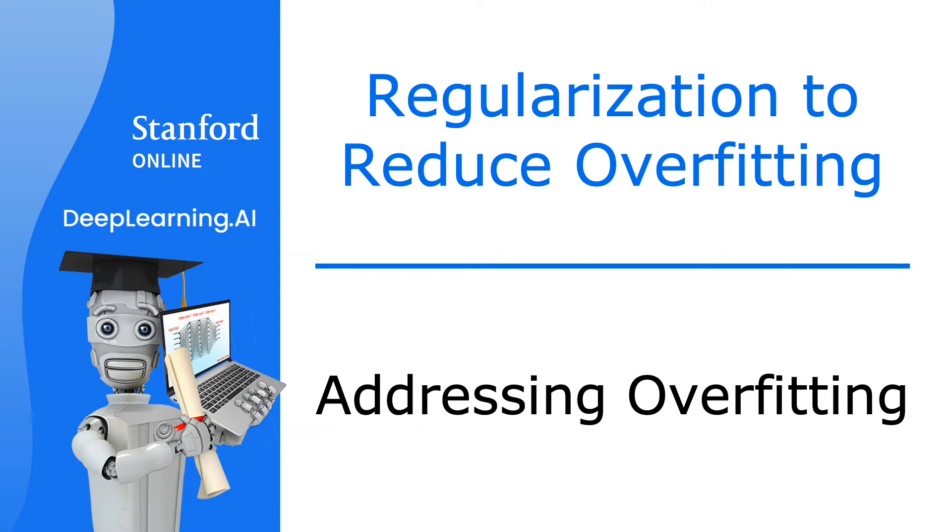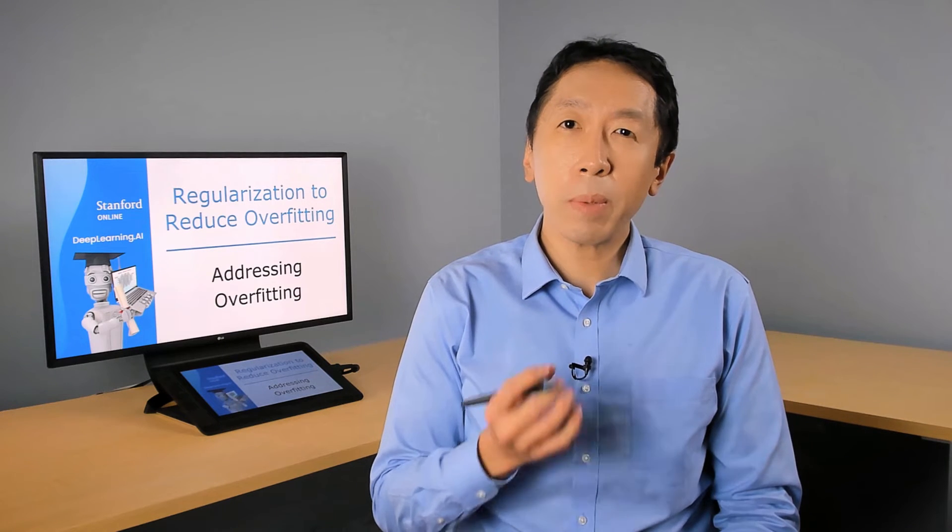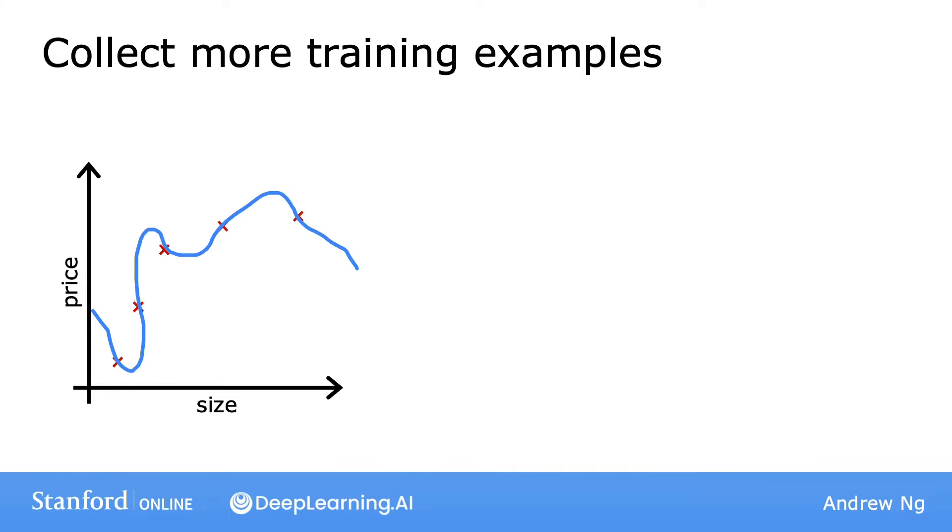Later in this specialization, we'll talk about debugging and diagnosing things that can go wrong with learning algorithms. You'll also learn about specific tools to recognize when overfitting and underfitting may be occurring. But for now, when you think overfitting has occurred, let's talk about what you can do to address it. Let's say you fit a model and it has high variance, it's overfit. Here's our overfit house price prediction model.